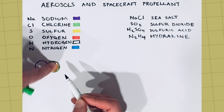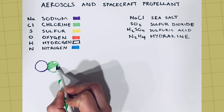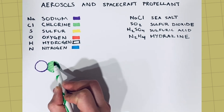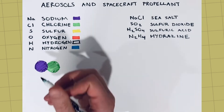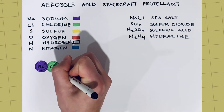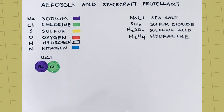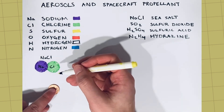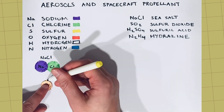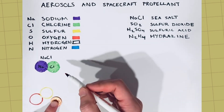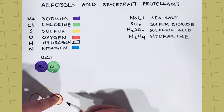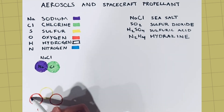Sea salt, sulfur dioxide, and sulfuric acid are aerosols, or tiny solid particles and liquid droplets in the atmosphere. JPSS monitors these aerosols and their effect on the atmosphere. Sea salt is flung into the atmosphere by high winds. The chemical formula for sea salt, NaCl, is one sodium atom and one chlorine atom.